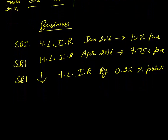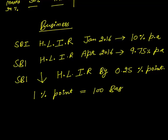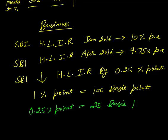In India, generally the term percentage point is less used; the term that is more used is basis point. What is the relation between these two? One percentage point is equal to 100 basis points. So 0.25 percentage point means how much? 25 basis points. It means that any percentage point, you need to multiply it by 100 in order to get the basis point.